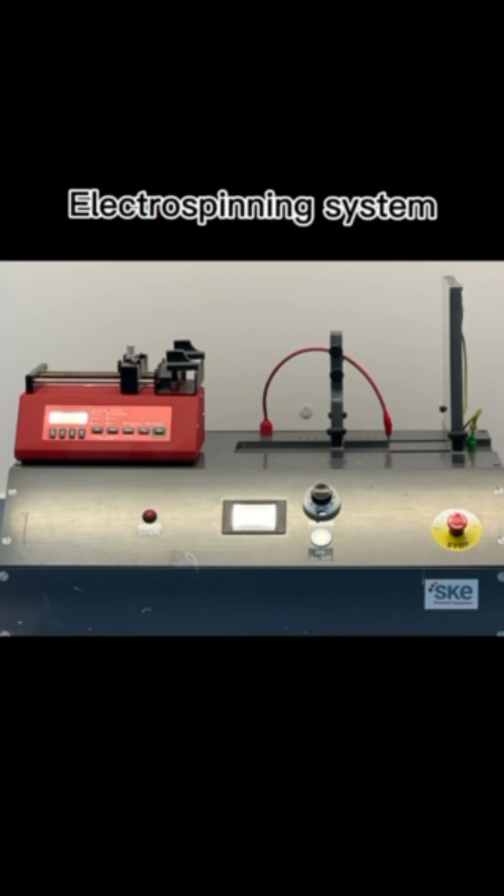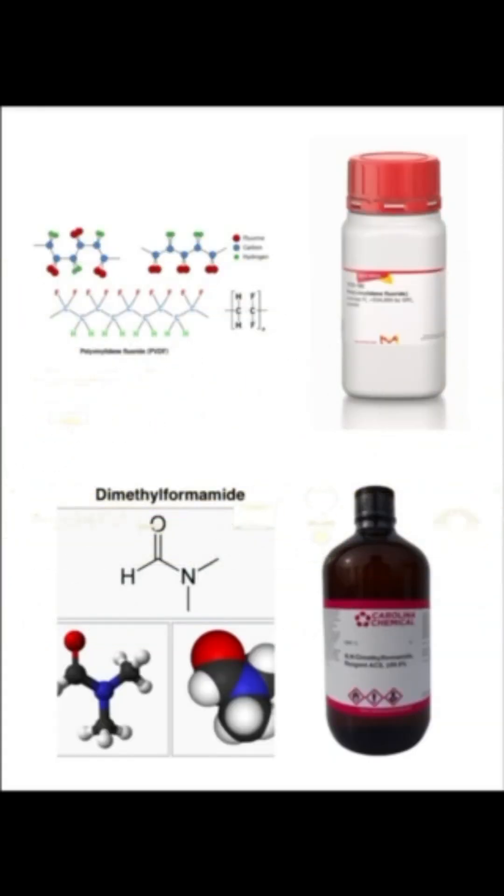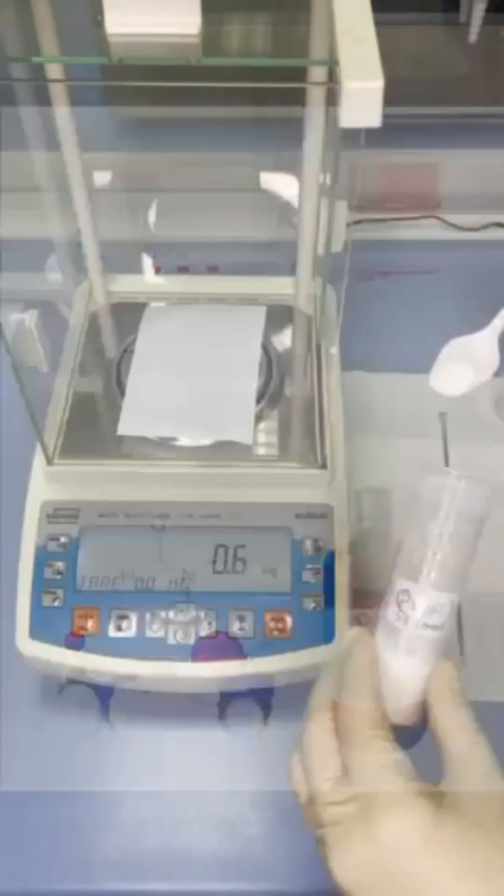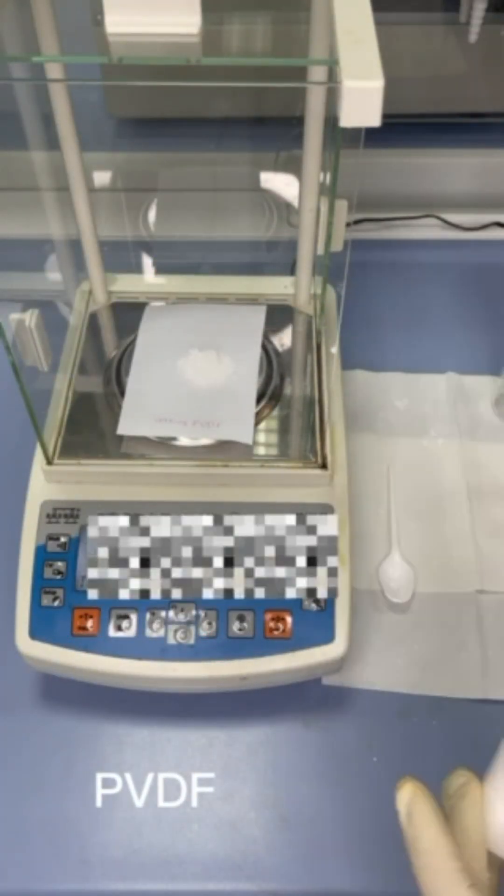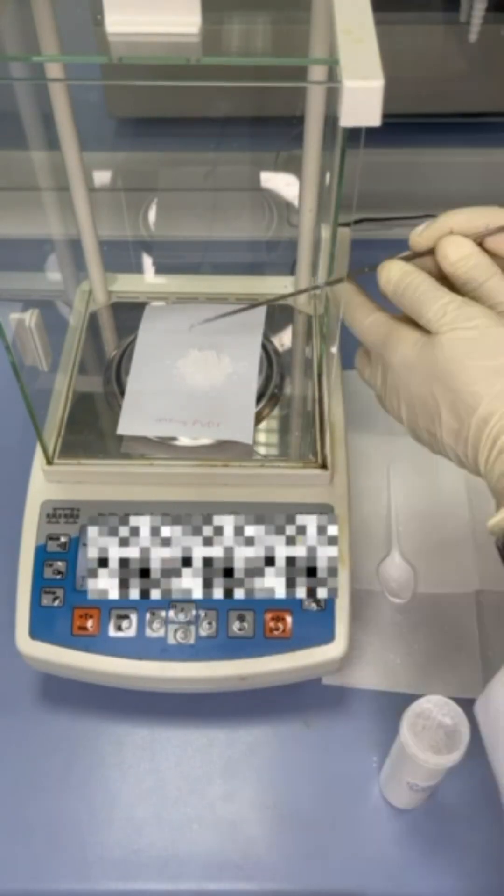In this video we will talk about how we make membrane with electrospinning system. We will use the polymer PVDF with some fillers, graphene or carbon, and the solvent DMF. I will start the procedure with the polymer, the filler which is carbon, and the solvent.